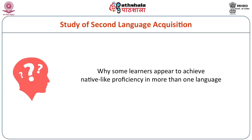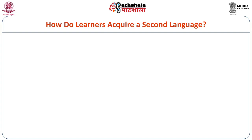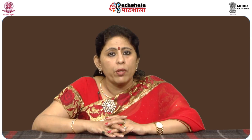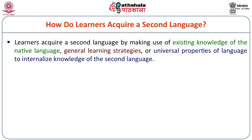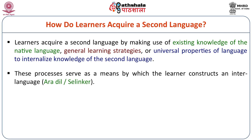Why do some learners appear to achieve native-like proficiency in more than one language? The answer comes from asking how learners acquire a second language. Learners acquire a second language by making use of existing knowledge of the native language, general learning strategies, or universal properties of language to internalize knowledge of the second language. These processes serve as a means by which the learner constructs an interlanguage, and communication strategies are employed to cope with communication difficulties.